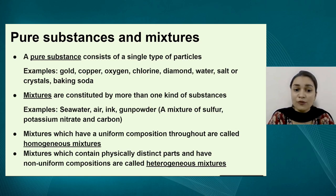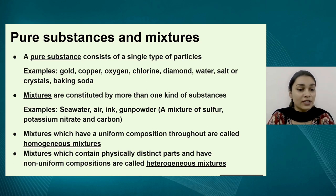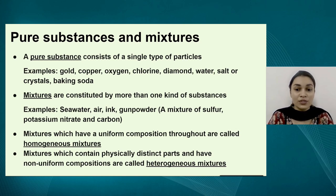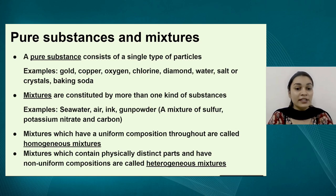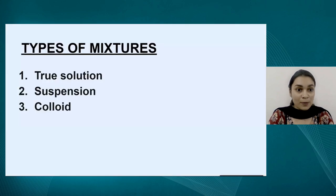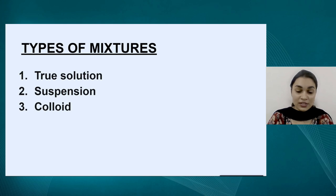We have two kinds of mixtures: homogeneous and heterogeneous. A homogeneous mixture is one in which the components are spread evenly throughout the bulk of the mixture, giving a uniform composition throughout. A heterogeneous mixture is the opposite — the components are not evenly distributed and are arranged in a non-uniform way. Today we are going to cover three kinds of mixtures: true solution, suspension, and colloid.